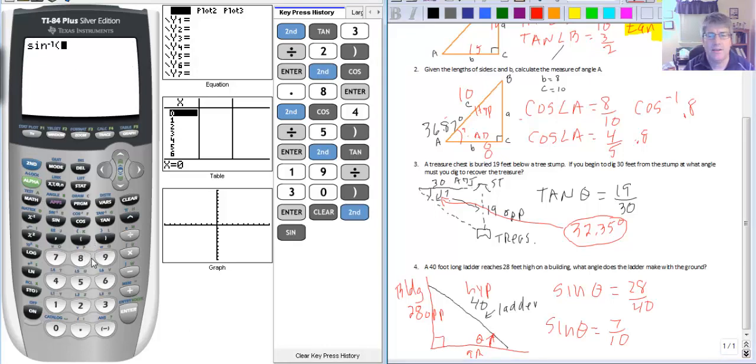So we'll do second sine. Hey calculator. I've got the ratio. I need the angle. 0.7.